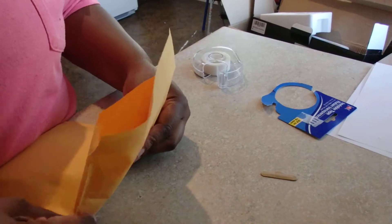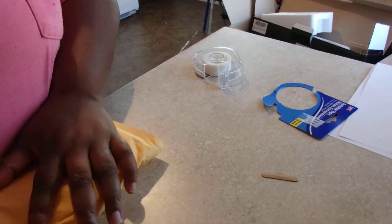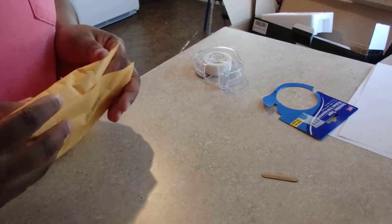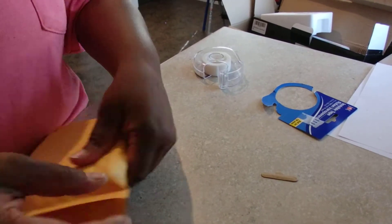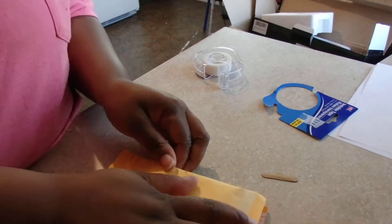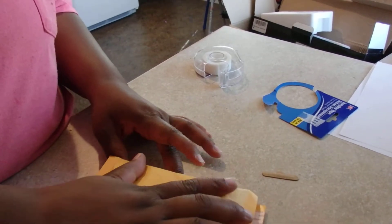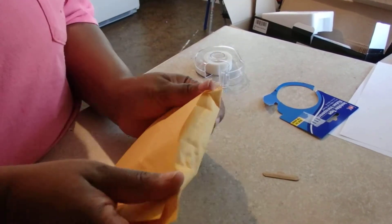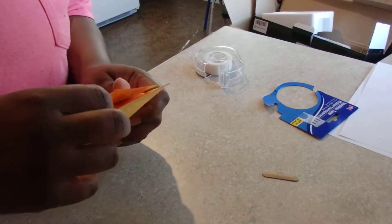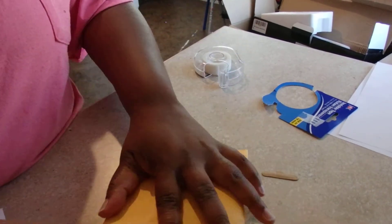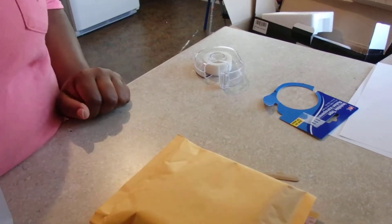And then fold it and seal it like that. Make sure the two corners are out so it's a smaller package, it's a little more confined. And then just put the shipping label on there. Tape down the corners so they don't get trapped on anything. And that's the package.